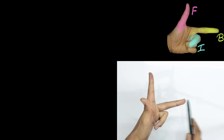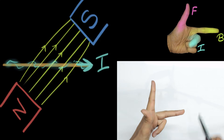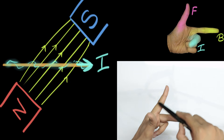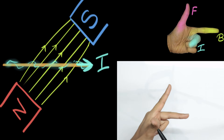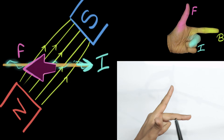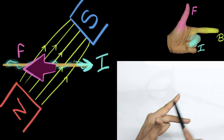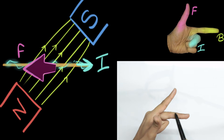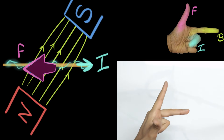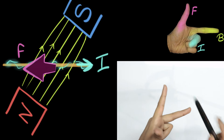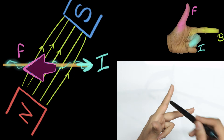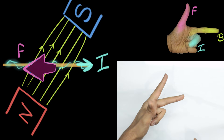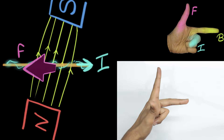One last question: what if the magnetic field and the current are not perpendicular to each other — what if there's some angle between them? It turns out the direction of the force won't change. The direction of the force remains exactly the same regardless of the angle between the magnetic field and the current, so we can still use Fleming's left hand rule. The force will always be perpendicular to both the field and current fingers, though in most cases we'll deal with them perpendicular to each other.